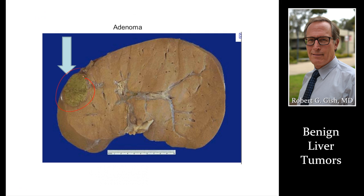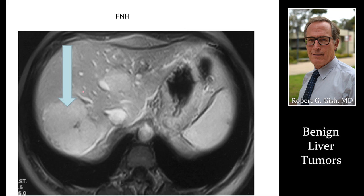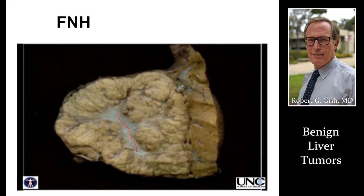Here's another picture of an adenoma from a patient who had a big part of their liver resected. FNH — focal nodular hyperplasia — will never turn into cancer and is not hormone or estrogen-dependent. Rarely do these have to be resected, and rarely do they cause pain, but they can get pretty big. A scar and small blood vessel may lead to the decision for resection, especially if the tumor is hanging off the liver like a pendulum and causing pain, rubbing, or irritation.